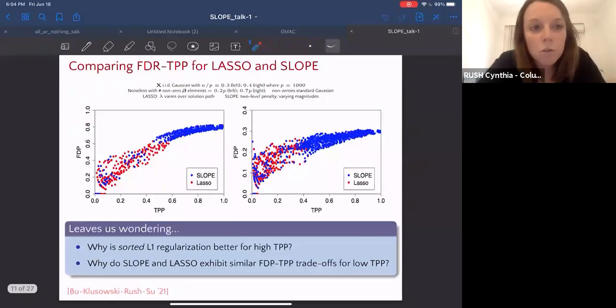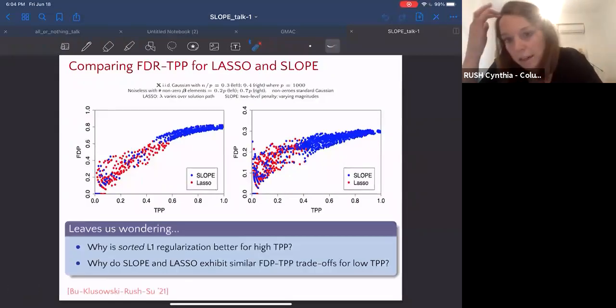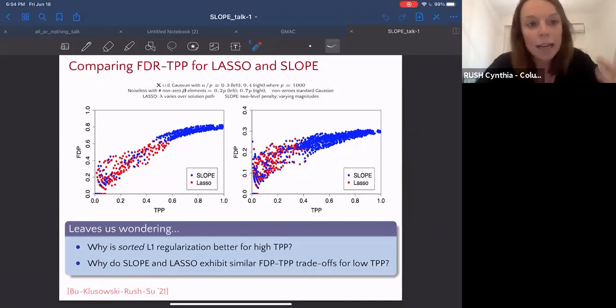Recognizing this, we're tempted to ask why is sorted L1 regularization better than the usual L1 regularization for high TPP? And why do SLOPE and lasso exhibit similar trade-offs in the low TPP regime? This is what we're going to try to answer today.